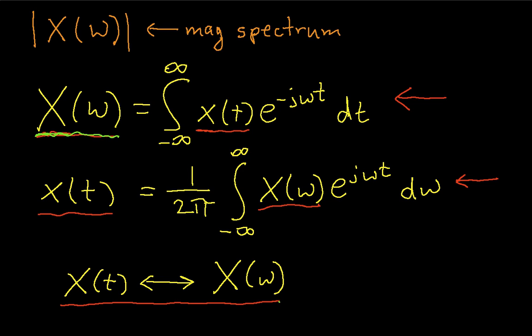Again, the magnitude means that if I have a point in the complex plane, let's say this point right here, then the distance from the point to the origin is the magnitude.